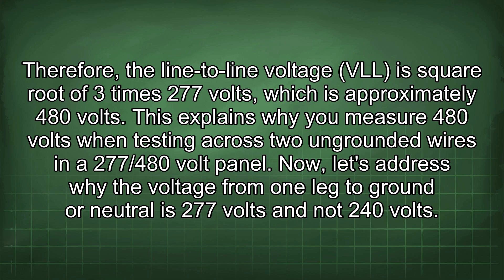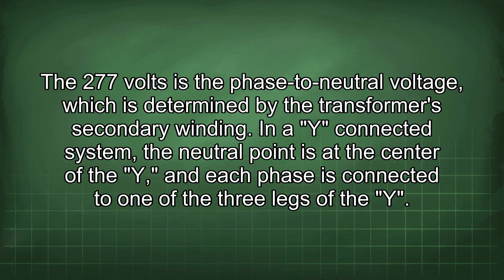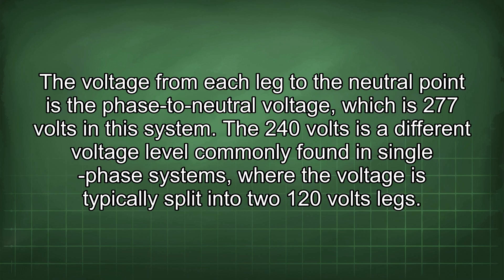This explains why you measure 480 volts when tested across two ungrounded wires in a 277/480 volt panel. Now let's address why the voltage from one leg to ground or neutral is 277 volts and not 240 volts. The 277 volts is the phase-to-neutral voltage, which is determined by the transformer's secondary winding. In a Y-connected system, the neutral point is at the center of the Y, and each phase is connected to one of the three legs. The voltage from each leg to the neutral point is 277 volts in this system.